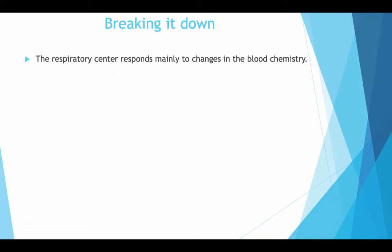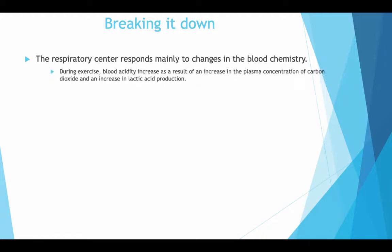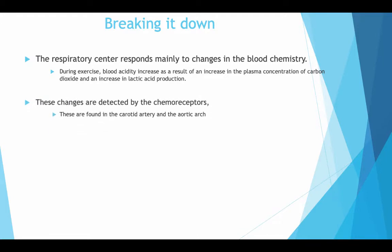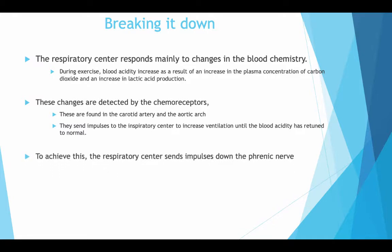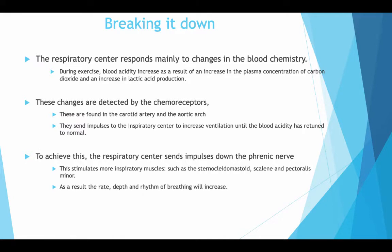The respiratory centre responds mainly to changes in blood chemistry. During exercise, blood acidity increases as a result of the increase in plasma concentration of carbon dioxide and an increase in lactic acid production. These changes are detected by the chemoreceptors, found in the carotid artery and the aortic arch. They send impulses to the inspiratory centre and increase ventilation until blood acidity returns to normal. To achieve this, the respiratory centre sends impulses down the phrenic nerve, stimulating more inspiratory muscles such as the sternocleidomastoid, scalenes and pectoralis minor, increasing the rate, depth and rhythm of breathing.